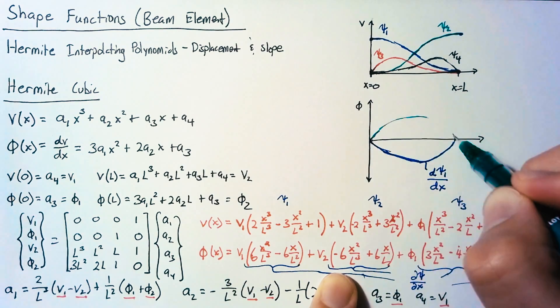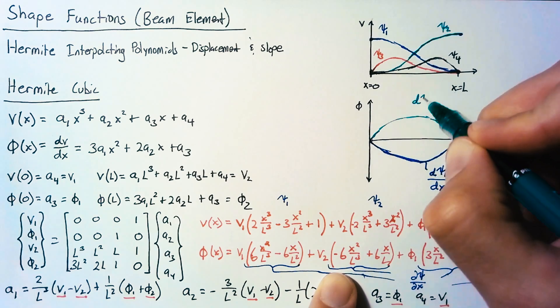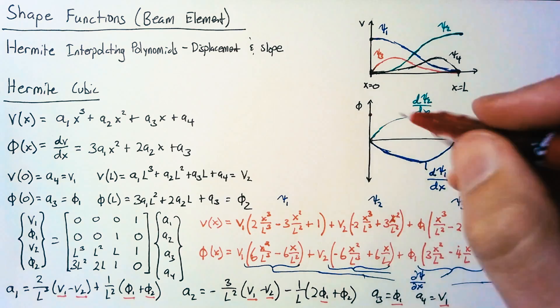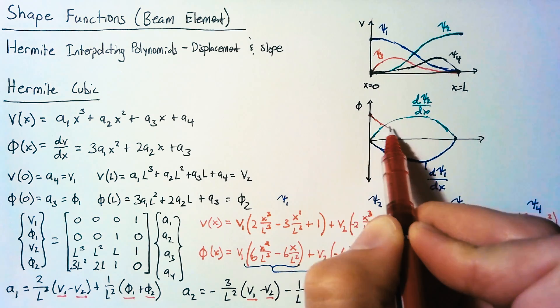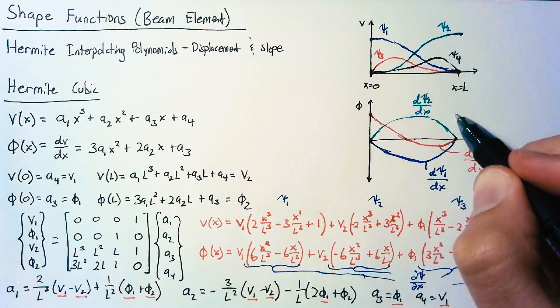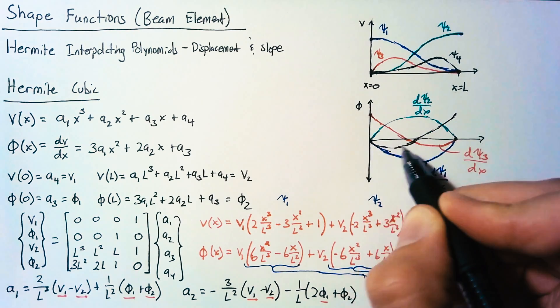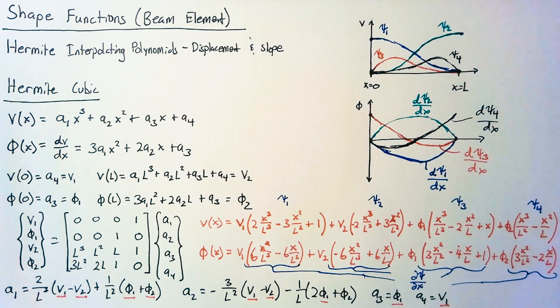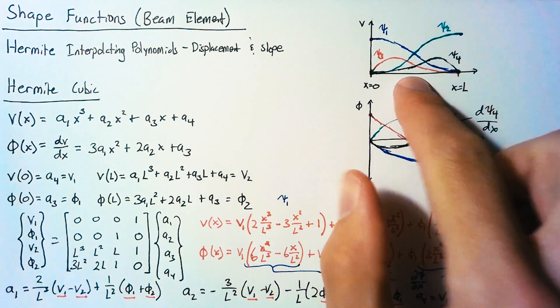psi2 is just going to be equal and opposite. Psi3 starts off at 1, it's going to end at 0, and it's going to be parabolic. Psi4 is going to look the same, just mirrored. So this is a rough sketch of what each of those shape functions looks like for both displacement and slope.